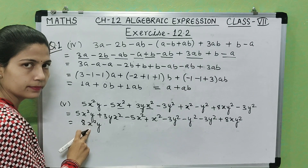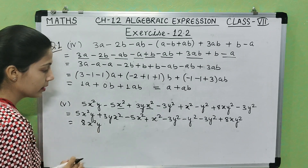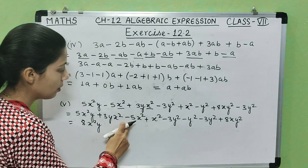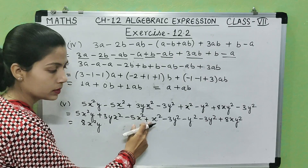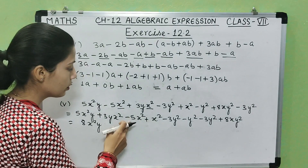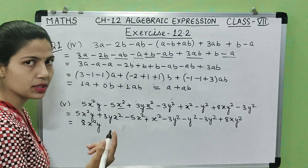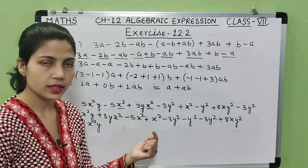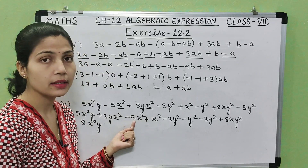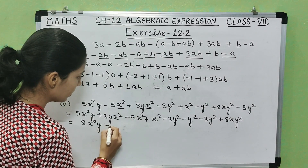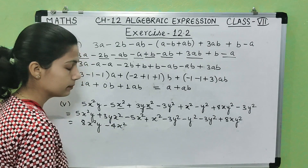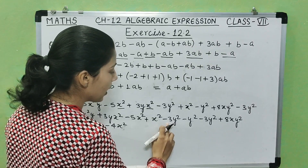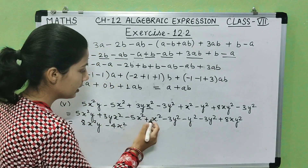So 5 plus 3 is 8, so 8x square y. Then minus 5 plus 1: one is negative, one is positive, so subtraction: 5 minus 1 is 4, sign goes with greater number 5 which is negative, so minus 4x square. Now minus 3y square and minus y square — both are negative, so add: 3 plus 1 is 4, both negative so minus 4y square.